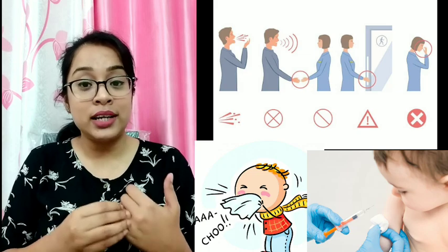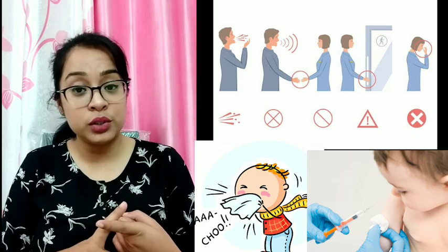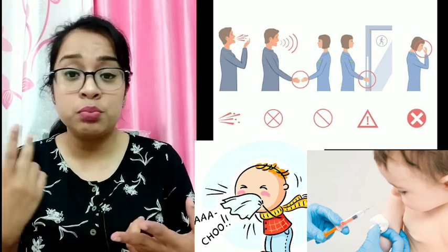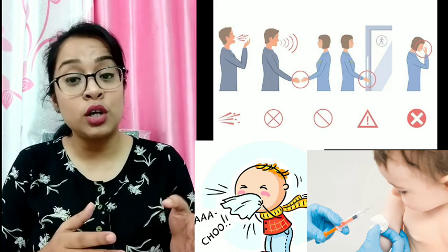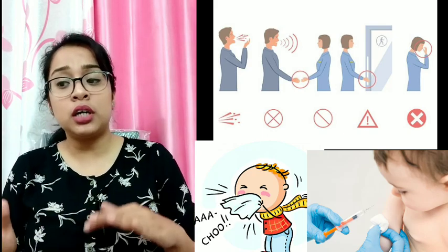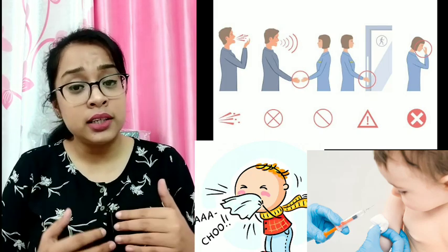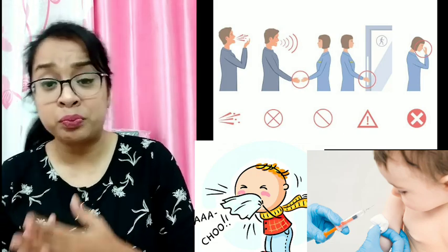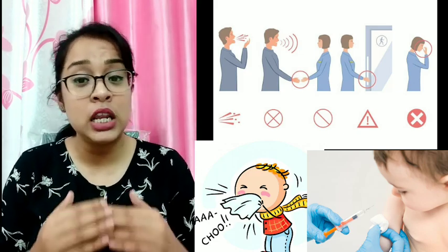To avoid insect bites, use mosquito nets and mosquito repellent creams or mortines so that insects will not bite you and infect you. You should also keep your surroundings clean and not allow water to stagnate near your house, as stagnant water is the breeding ground of insects such as mosquitoes. If you don't allow them to breed and multiply, the spread of disease will reduce.